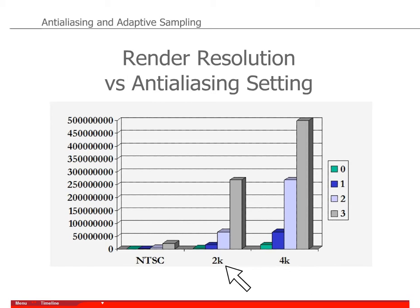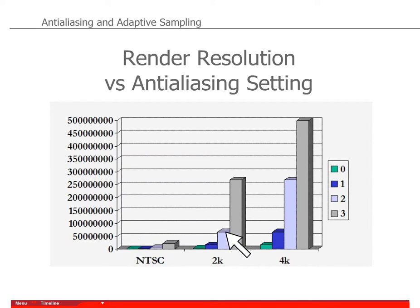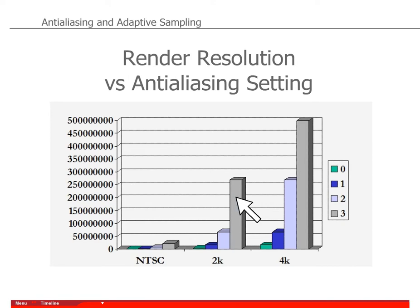But if we go to 2K, for example, increasing from 2 to 3 — you're talking about 50 million samples for an NTSC level 2 at 2K, and if you increase it by only 1, this will go to 250 million samples. So you can see that just increasing the NTSC by 1 has a huge impact.